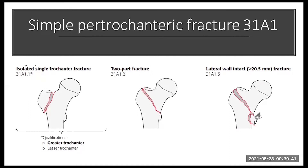The A1 is a simple fracture, either with a single isolated fracture at the greater trochanter or lesser trochanter. Commonly these are two-part fractures that might have a small lesser trochanteric fragment but with a good thickness of the lateral wall.